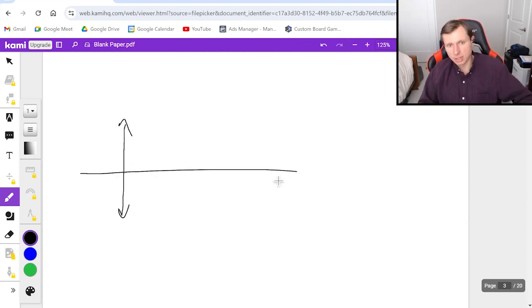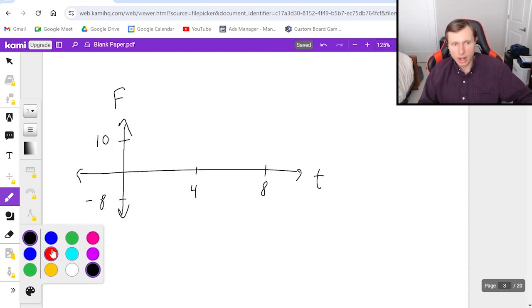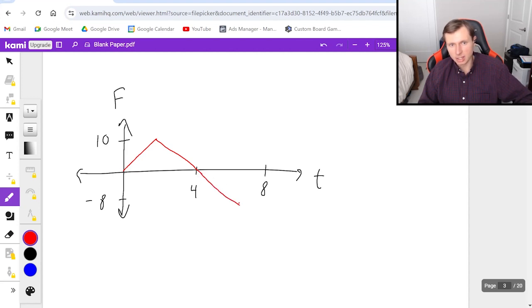For this one, starts out the same with a force versus time graph. This time though, the times are four and eight. On the y-axis, we have positive 10, and down here, negative eight. And then the graph is going to look like this. Goes up, then goes down all the way to negative eight, and then goes back up again right there. So we have our shapes.